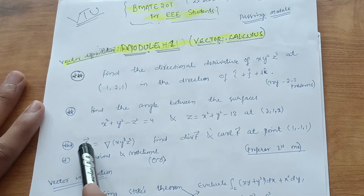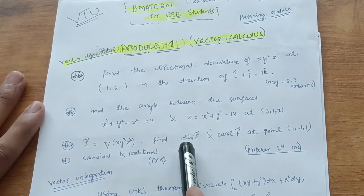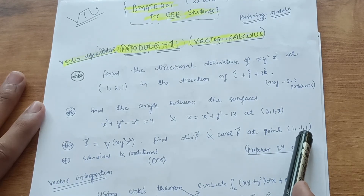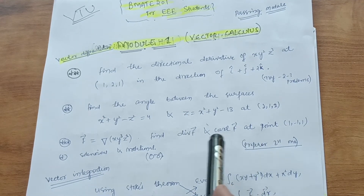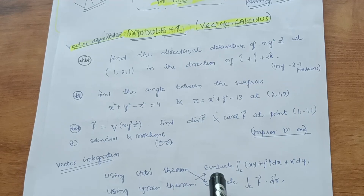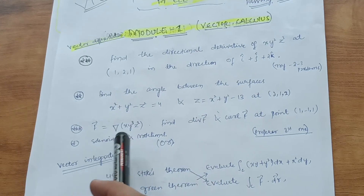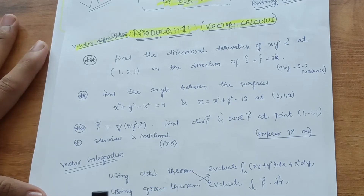Another important type: given F = curl of xy³z², find divergence of F and curl of F at point (1, −1, 1). These are simpler problems. As for Vector Integration, concepts include Stokes' theorem and Green's theorem — these are tougher. Also try solenoidal and irrotational problems where an equation is given and you must identify the type. Module 1 is a passing module.